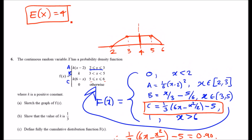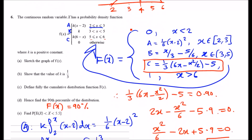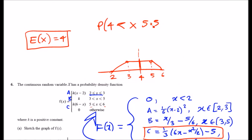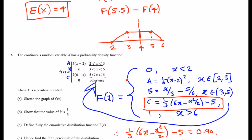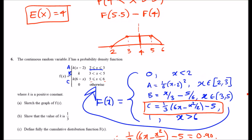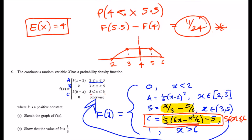With E[X] = 4, we need P(4 < X < 5.5) = F(5.5) minus F(4). Since 5.5 lies between 5 and 6, use piece C with x equals 5.5. Since 4 lies between 3 and 5, use piece B with x equals 4. Computing both and subtracting gives the final answer of 11 over 24. That completes all parts of the question.